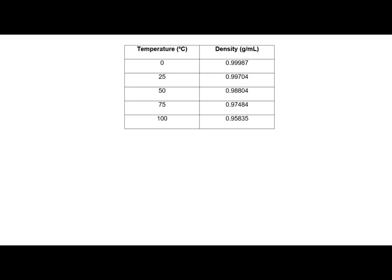Molarity is a great way to measure concentration, but it is not the only way. One problem with molarity is it does not account for how the density of water changes with temperature. This table shows the density of water at various temperatures, and it definitely varies. In situations requiring very precise concentration measurements, chemists and engineers need a method independent of water's changing density. This concentration is called molality. The definition of molality is moles of solute over kilograms of solvent — not liters of solution, and only the solvent.